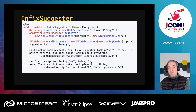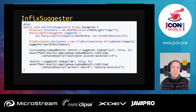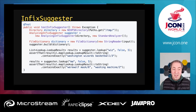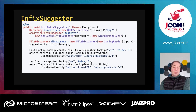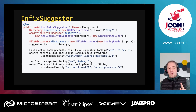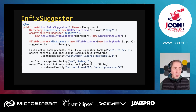The infix suggester: in this example, searching for 'with' returns 'Washington Wizards basketball' as a hit, whereas previously this only appeared when typing 'washington' at the beginning as a prefix. Searching for 'ma' also returns the 'werewolf mask', since both new words start with 'ma' — so it's not searching for 'ma' in the middle of a term, just at the start of any word within the phrase.